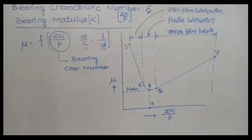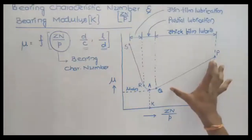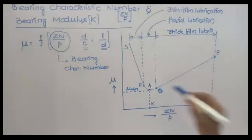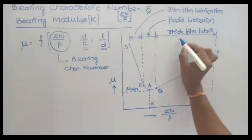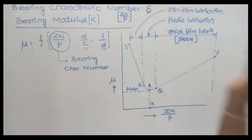The PQ region indicates thick film lubrication, meaning the bearing is under hydrodynamic conditions. The metal-to-metal contact is completely eliminated, so there is no friction between the journal and the bearing due to metal-to-metal contact. If the zn/p value falls between P and Q, the bearing is running under stable conditions — this is the stable working region of the journal bearing.